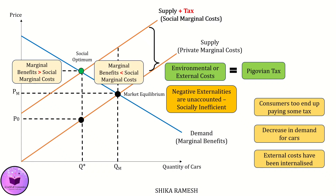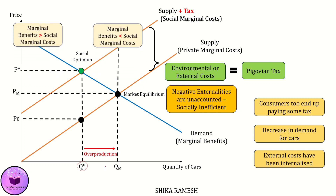To the right of Q*, social marginal costs are greater than marginal benefits. This means automobile production up to Q* is efficient, as it is inclusive of the external cost of production, whereas any automobile produced beyond Q* reflects an inefficient outcome as the negative externality created is unaccounted, leading to overproduction from society's perspective. At market equilibrium, the market price is low as it fails to reflect external costs, while the socially efficient price is higher at P*. The red triangle represents greater social marginal costs due to overproduction.